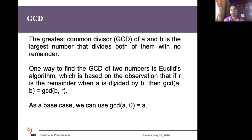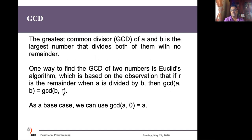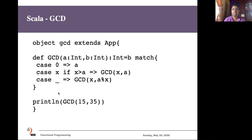The best example to explain tail recursion is the greatest common divisor (GCD) function. There is a theorem called the Euclidean theorem which simplifies the calculation: the GCD of any two given numbers a and b equals the GCD of the smaller number b and the remainder r = a mod b. The base condition is: GCD(a, 0) = a — if the smaller number is zero, the GCD is a.